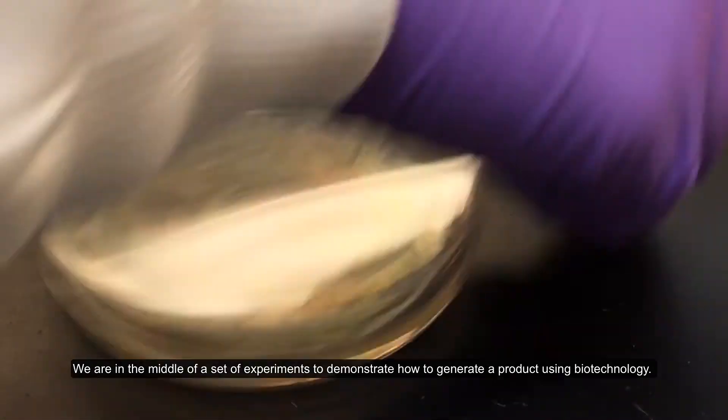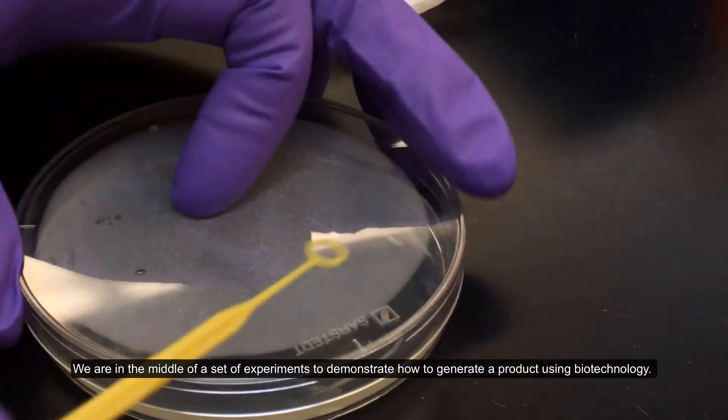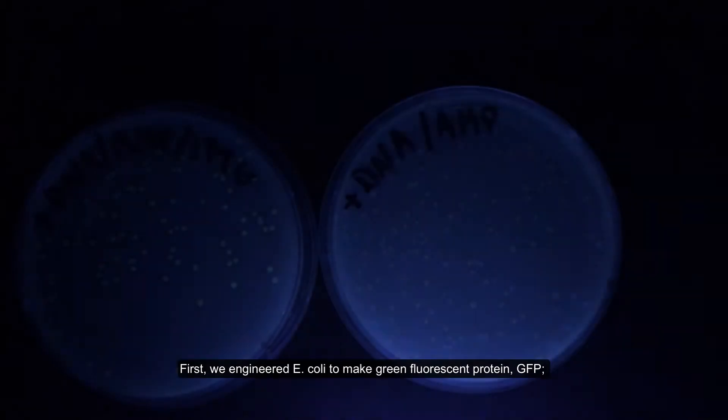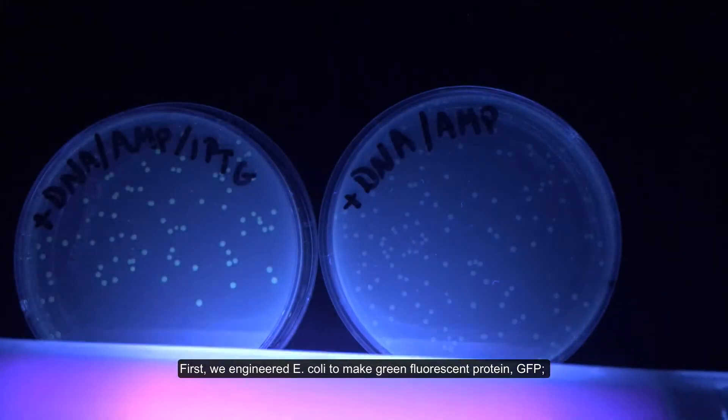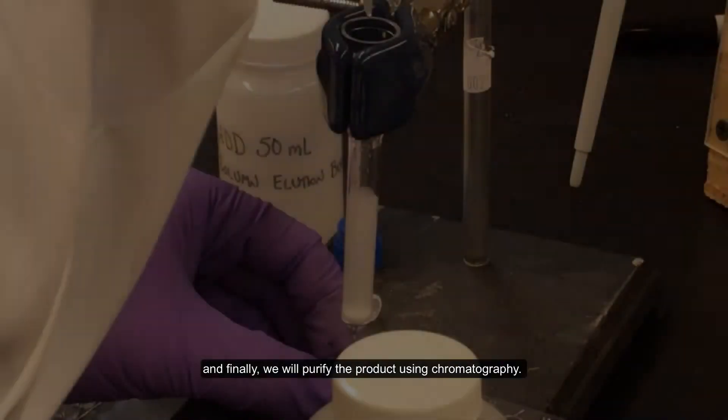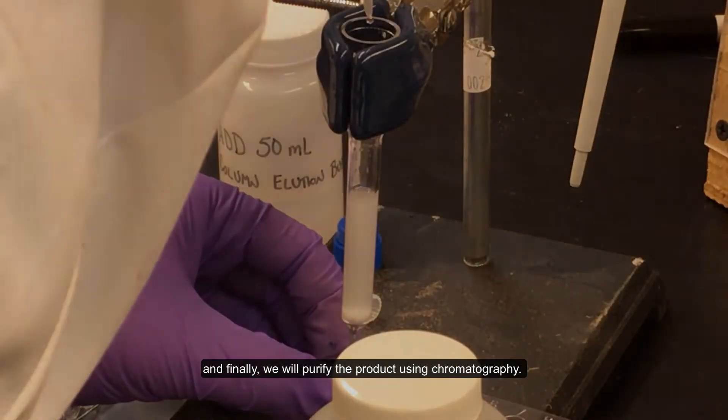We are in the middle of a set of experiments to demonstrate how to generate a product using biotechnology. First, we engineered E. coli to make green fluorescent protein, GFP. Next, we will scale up production using cell culture. And finally, we will purify the product using chromatography.